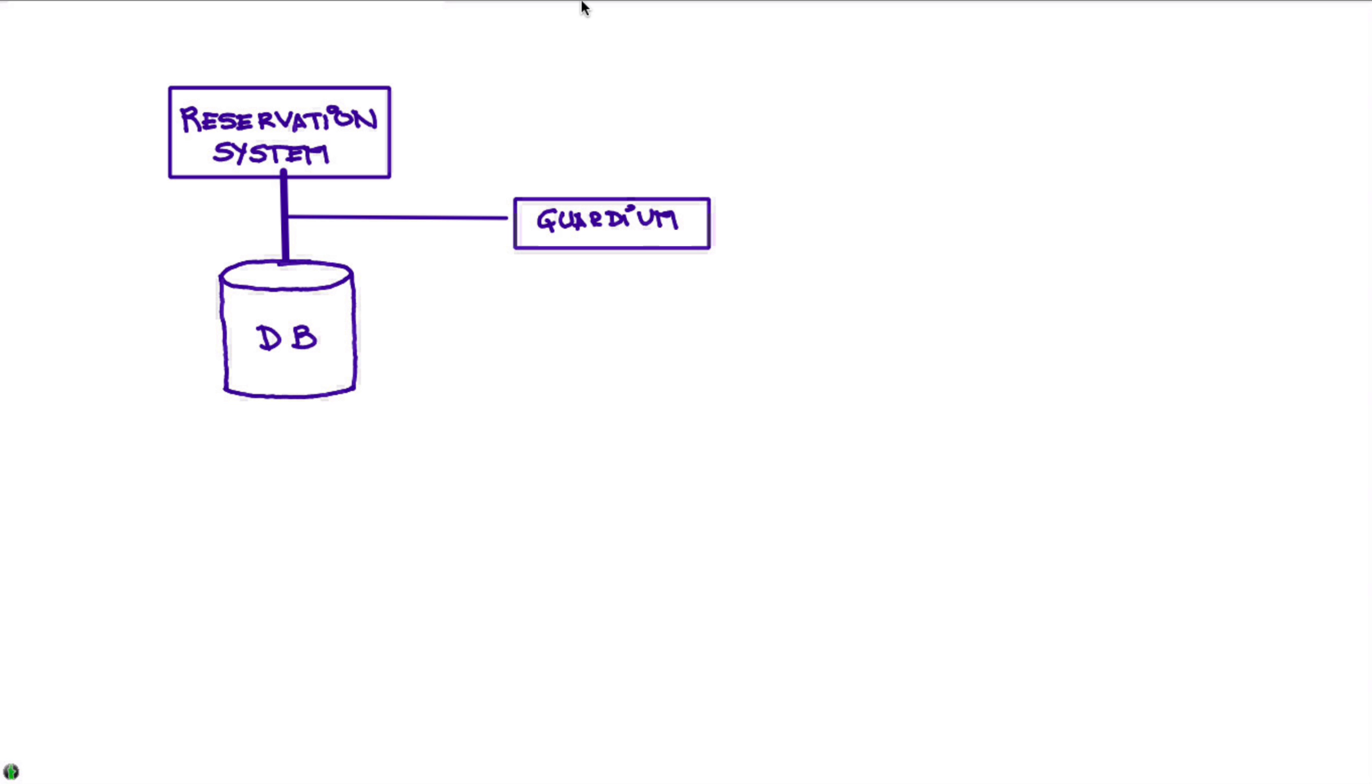basically, it is something that is on the wire. I mean, it's not intercepting the transactions per se, it's just listening to what goes on the wire and looks at all the SQL coming not only from the reservation system, from anything else that is really coming, looking for data.